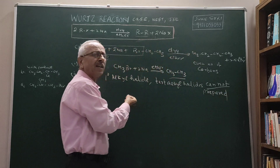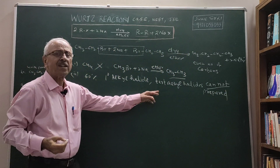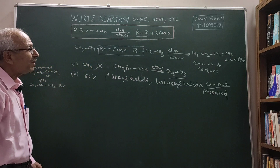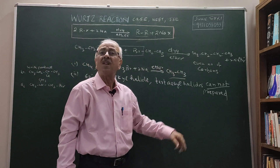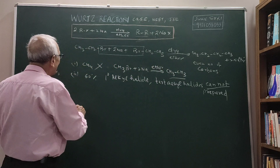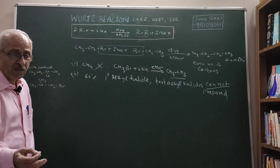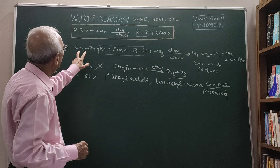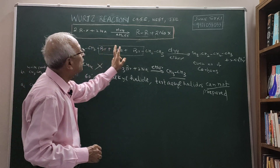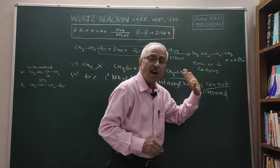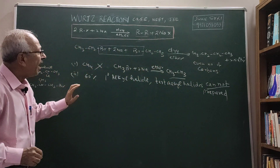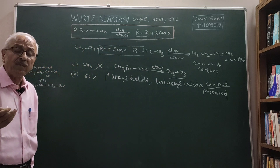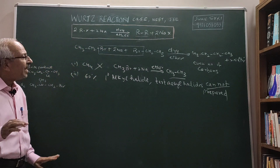With tertiary alkyl halides, elimination reactions take place, and therefore you will get alkenes instead of the desired product. Moreover, it is not possible to get pure products — there will always be some byproducts because of the mechanism of the reaction. From CH3CH2 you get four carbon atoms, but tertiary alkyl halides cannot be used because elimination possibilities are there and you will get alkenes.